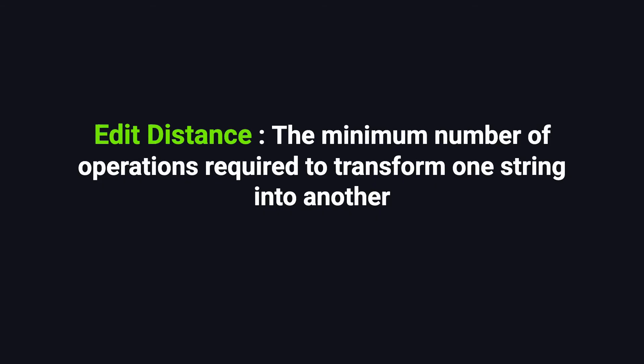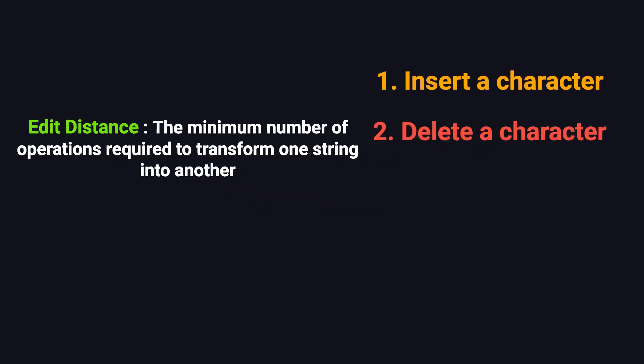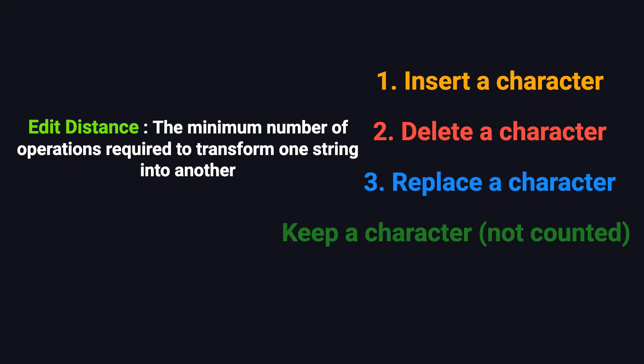So what exactly is Edit Distance? Edit Distance, also known as Levenshtein Distance, is the minimum number of operations needed to transform one string into another. There are three allowed operations: insert a character, delete a character, or replace a character. And if two characters are already the same, we don't need to do anything — that's called a match, and it doesn't count as an edit.